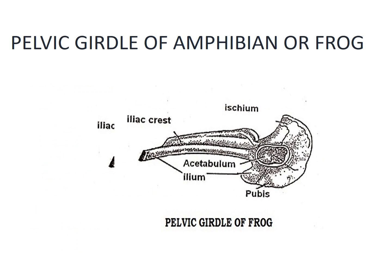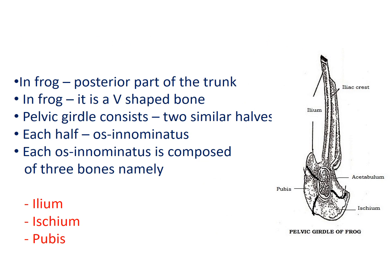Coming to the Pelvic Girdle of Amphibian or Frog. In this diagram you can see all the 3 bone elements involved in the formation of the Pelvic Girdle, and you can also see the location of all 3 bones, namely Ilium, Ischium and Pubis. In frog, Pelvic Girdle is located in the posterior part of the trunk region. It is a more or less V-shaped bone made up of 2 similar halves. Each half of the Pelvic Girdle is also called Os Innominatum, which is made up of 3 bone elements: Ilium, Ischium and Pubis.